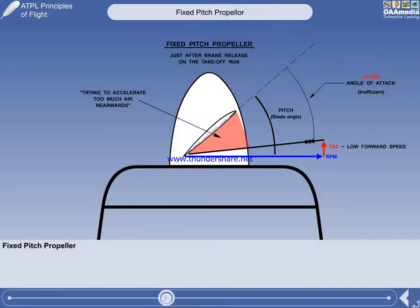One of the disadvantages of a fixed-pitch propeller is its lack of efficiency at low forward speed due to the large blade angle of attack. You could think of it as the propeller trying to accelerate too much air rearwards for the power output of the engine.